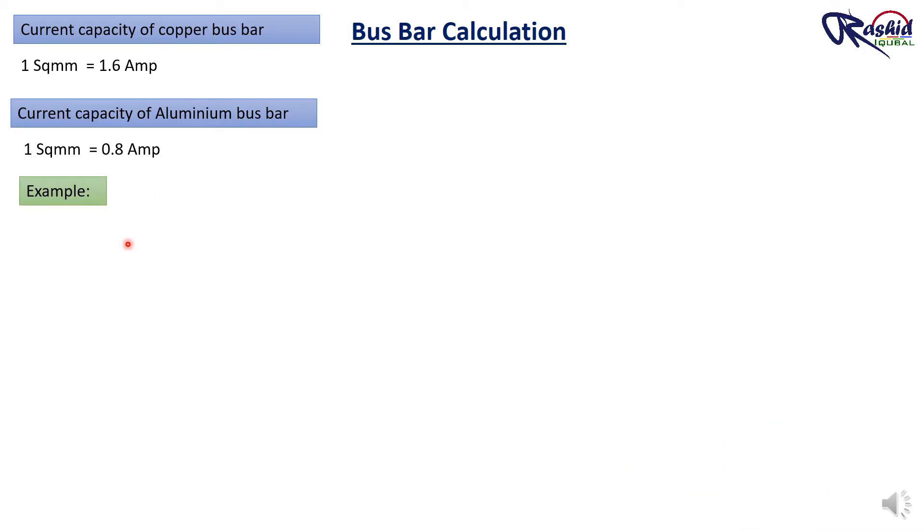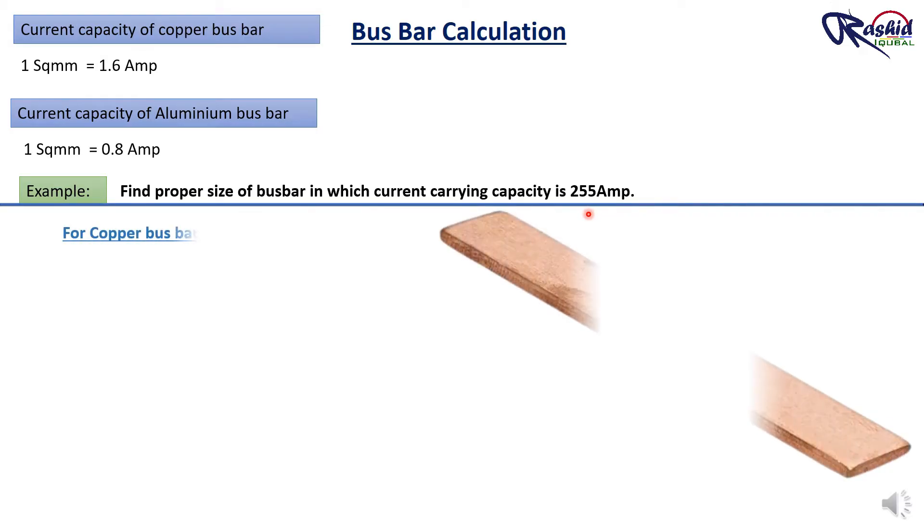Let me take one example to get more clear. Find proper size of busbar in which current carrying capacity is 255 ampere. So let me choose calculation for copper busbar. Here we have current 255 ampere.